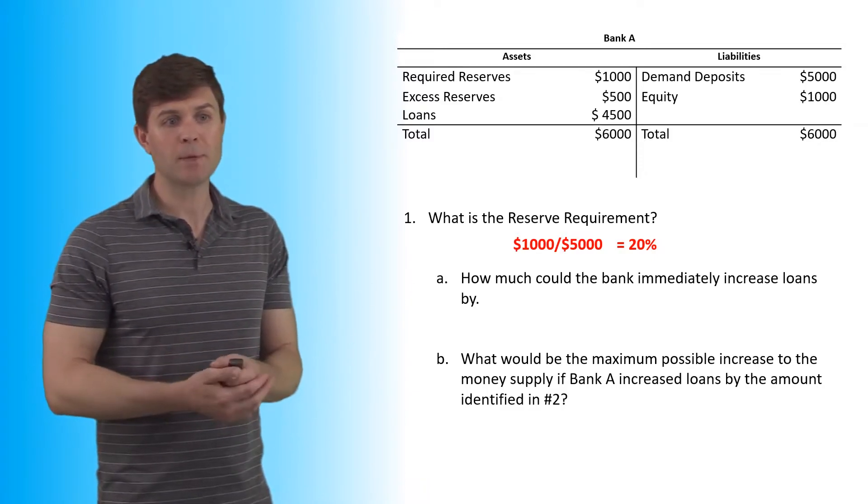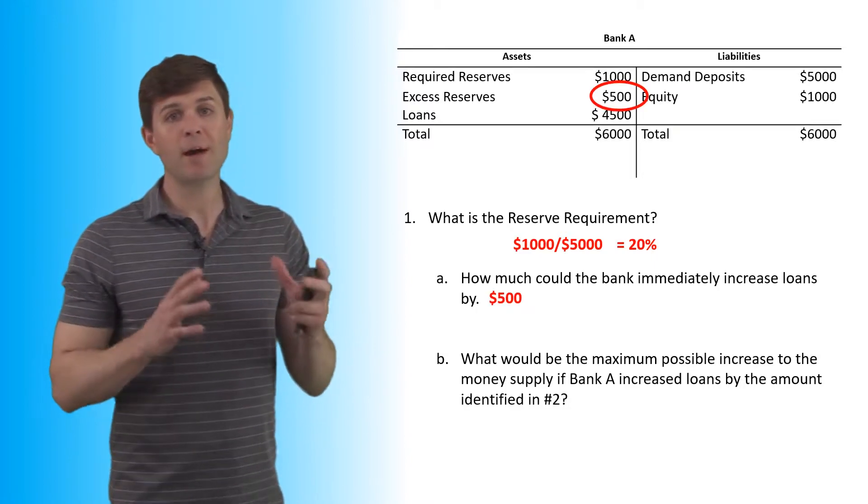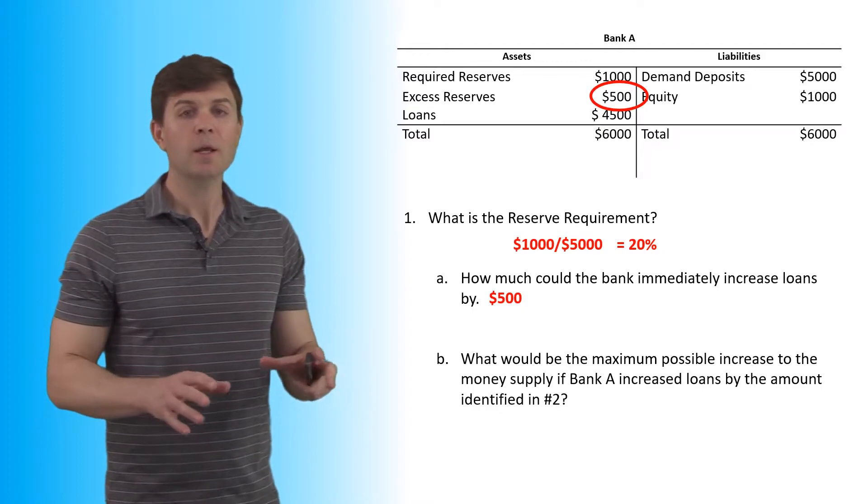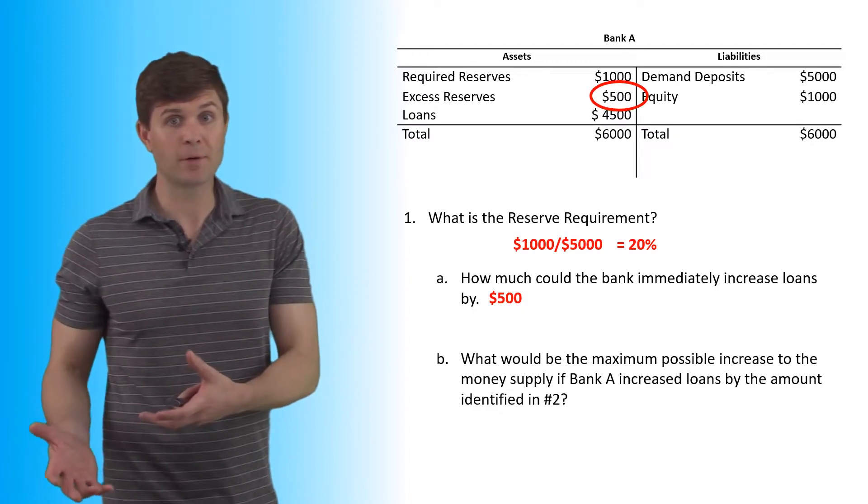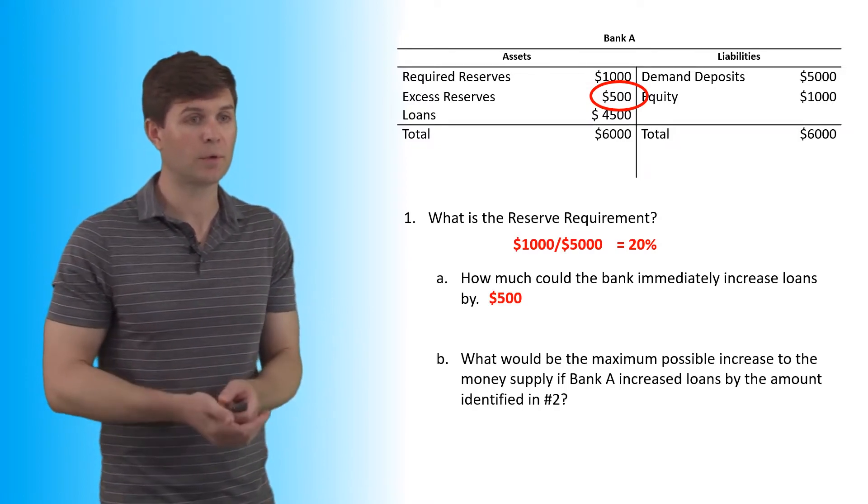So how much could the bank immediately increase loans by? In this case, we have to look at the excess reserves. They have a $500 excess reserve right there. So we could increase loans by $500. Immediately, that's how much could happen. In the long run is a different story, but immediately $500 is all we could increase by.